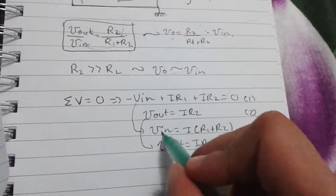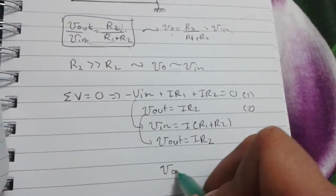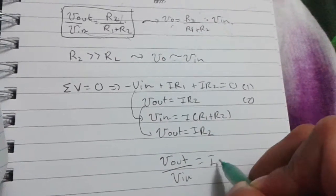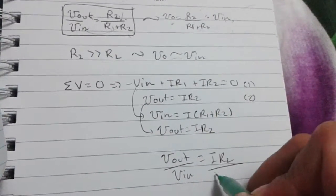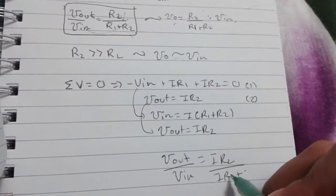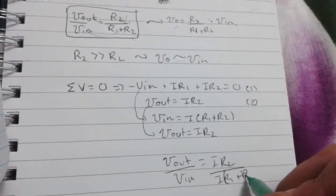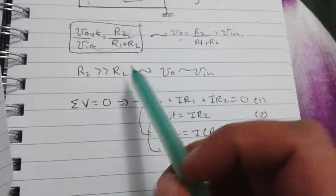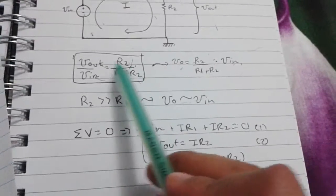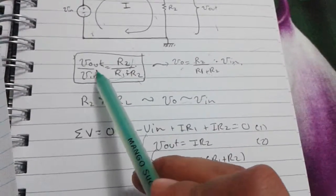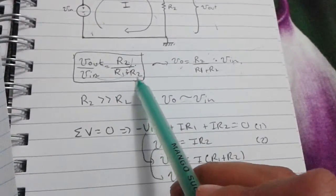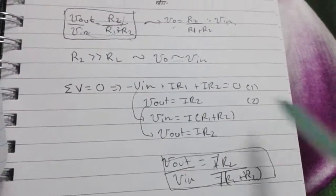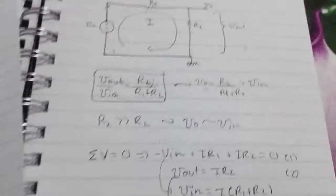So, V_in can be written as I times R1 plus R2. I brought the input voltage here and I factored out the I from equation one. And output voltage is equal to I times R2. Now, if I have to divide V_out by V_in, we get R2 over R1 plus R2. What we have seen at the beginning, right? So, we saw at the beginning, output voltage to input voltage is equal to R2 over R1 plus R2. And voila, same thing. So, we simply derived it using KVL.